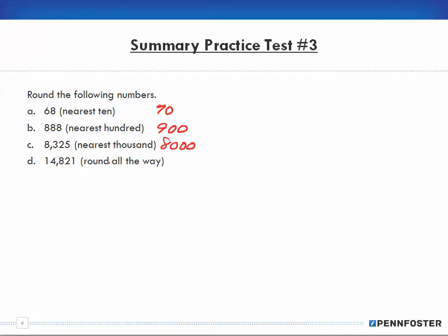This one says round all the way. I have 14,821. I start out with the 10,000s spot, which is a 1, and my 1,000s spot is a 4 — less than 5 — so I'm going to round down. From 14,000, I'm rounding down to 10,000.